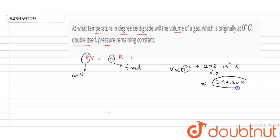This temperature when converted back into degrees Celsius becomes 273.15 degrees Celsius. So this is the temperature when volume gets double.